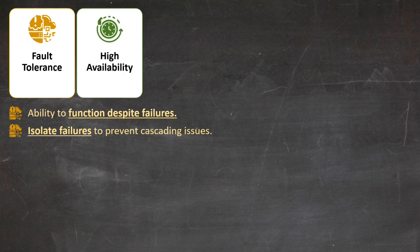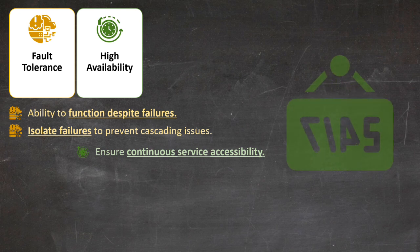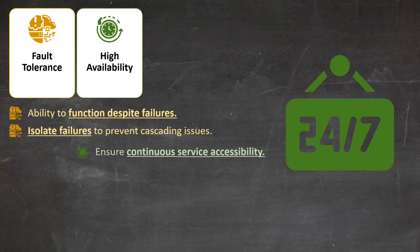Next, let's talk about high availability, or HA. This concept focuses on ensuring continuous service accessibility. The aim is to keep your system up and running 24/7, which is crucial for applications that can't afford downtime, like e-commerce platforms or critical business services.